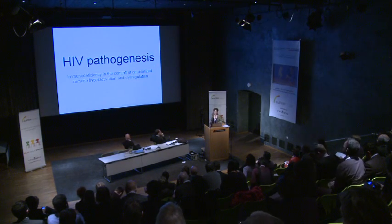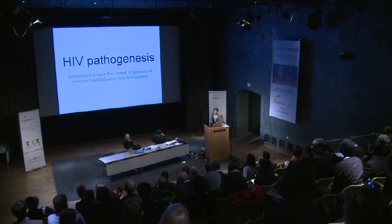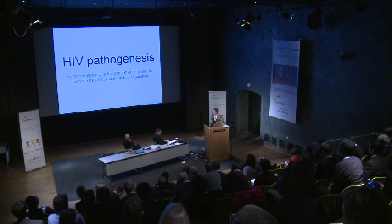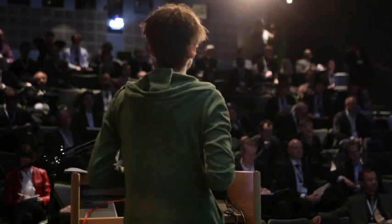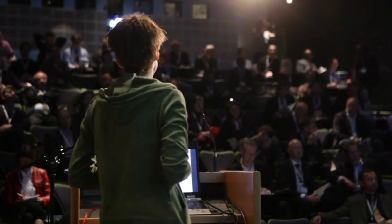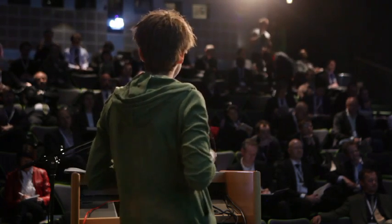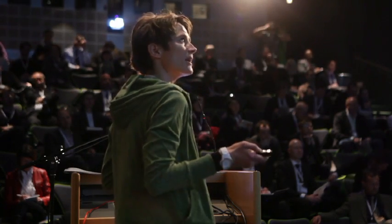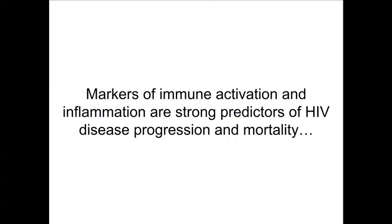In essence, HIV pathogenesis is characterized by immune deficiency in the context of generalized immune hyperactivation and dysregulation, and there exists a vicious cycle between HIV infection and replication and loss of CD4 cells and immune activation. On this background, it's not surprising that lots of markers of immune activation and inflammation are strong predictors of HIV disease progression and mortality.